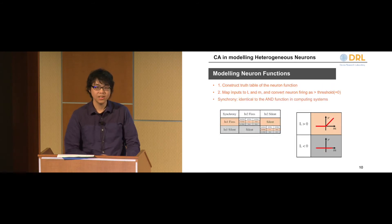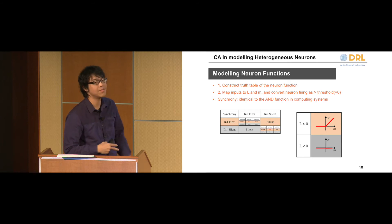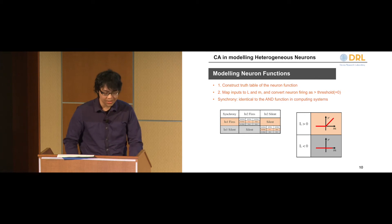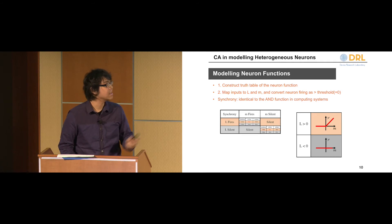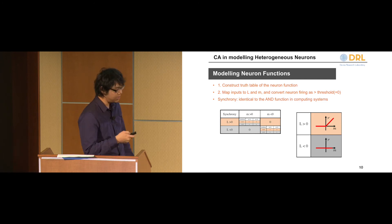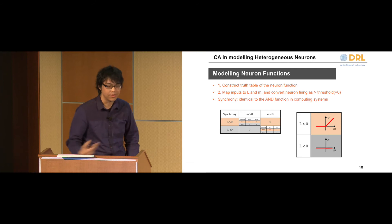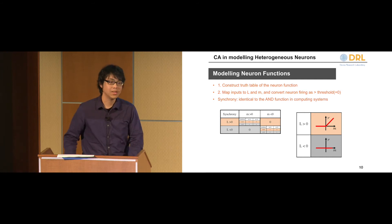These two functions are the ones we look at to create our conditional activation function. To map these two functions to conditional activation, we first create a truth table of their behaviors. You have two inputs: if they both fire at the same time, then the neuron fires; if they don't fire at the same time, the neuron is silent. That is the truth table for synchronous detection. We then map the two inputs to the condition and the membrane potential respectively — IN1 to L, IN2 to M — and map firing and silence to be larger or lower than the threshold.